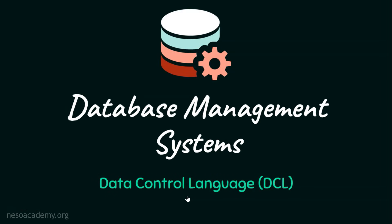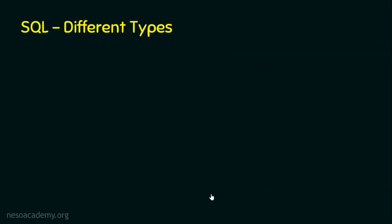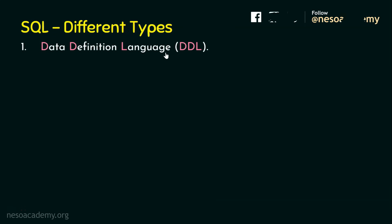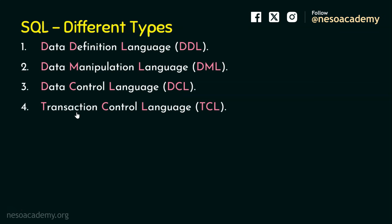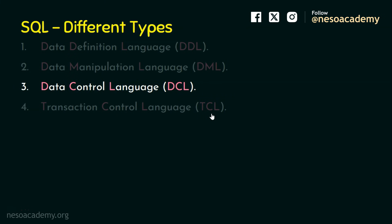In this presentation, we will focus on the next sub-language of SQL, the data control language. SQL has four different sub-languages: number one, the data definition language DDL; number two, the data manipulation language DML; number three, data control language DCL; and number four, the transaction control language TCL. We are now going to focus on the data control language DCL.